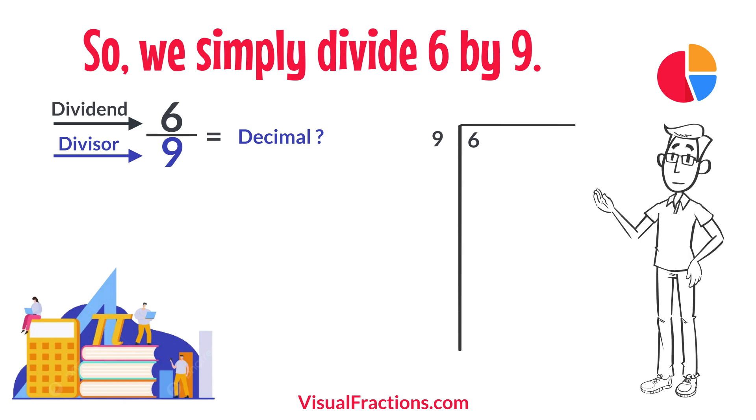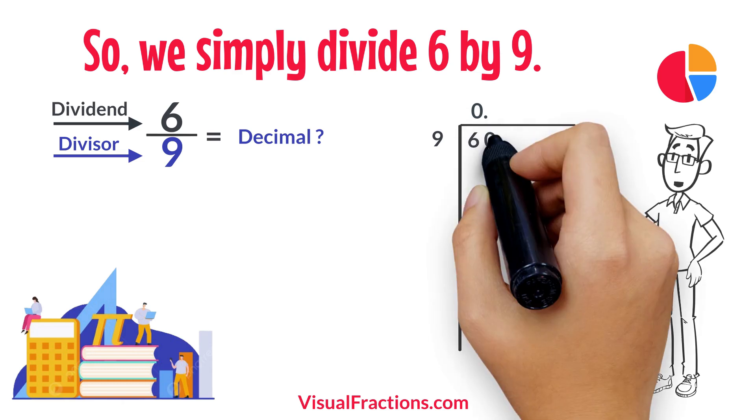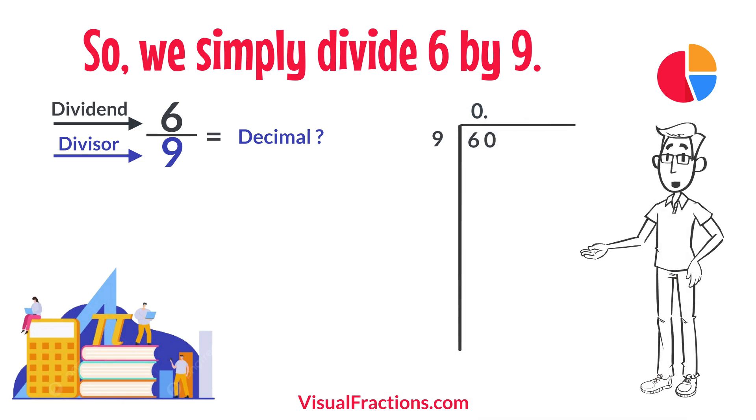Since 9 doesn't fit into 6, we add a decimal point in our answer and append a 0 to 6, making it 60. How many times does 9 go into 60? Exactly 6 times. We write 6 after the decimal point in the quotient.